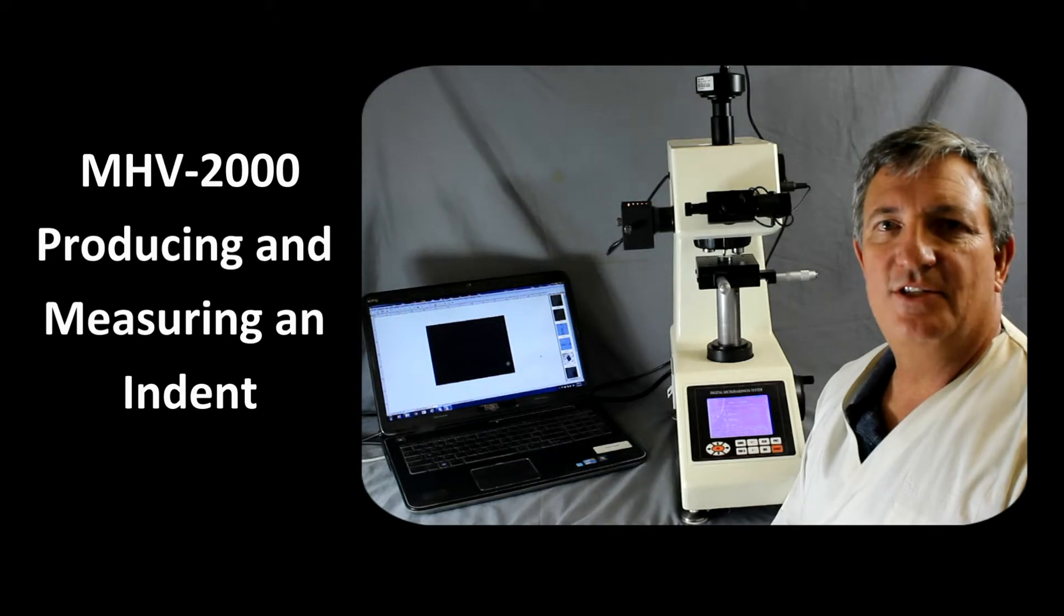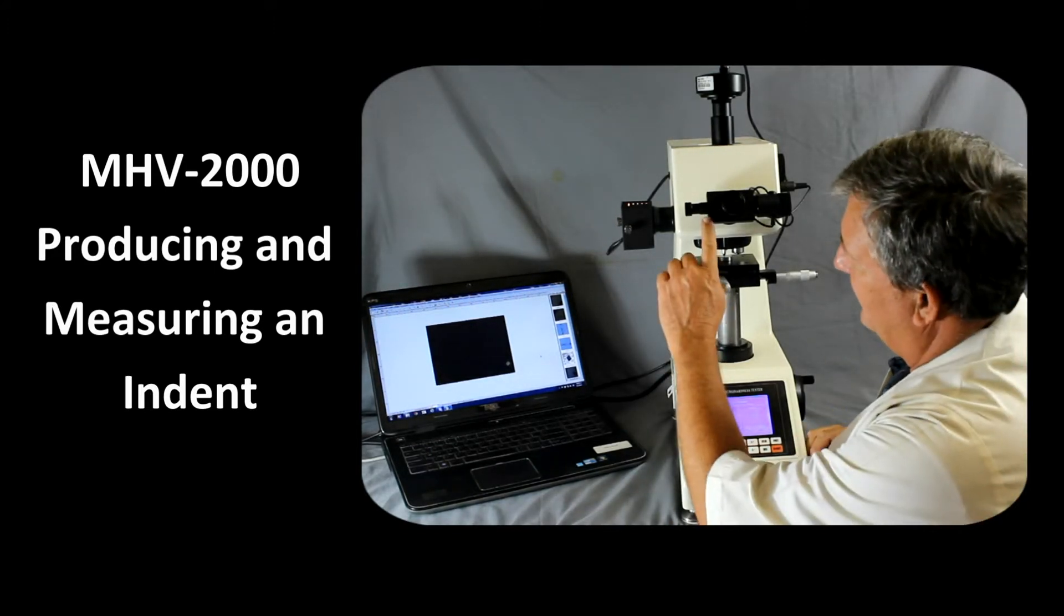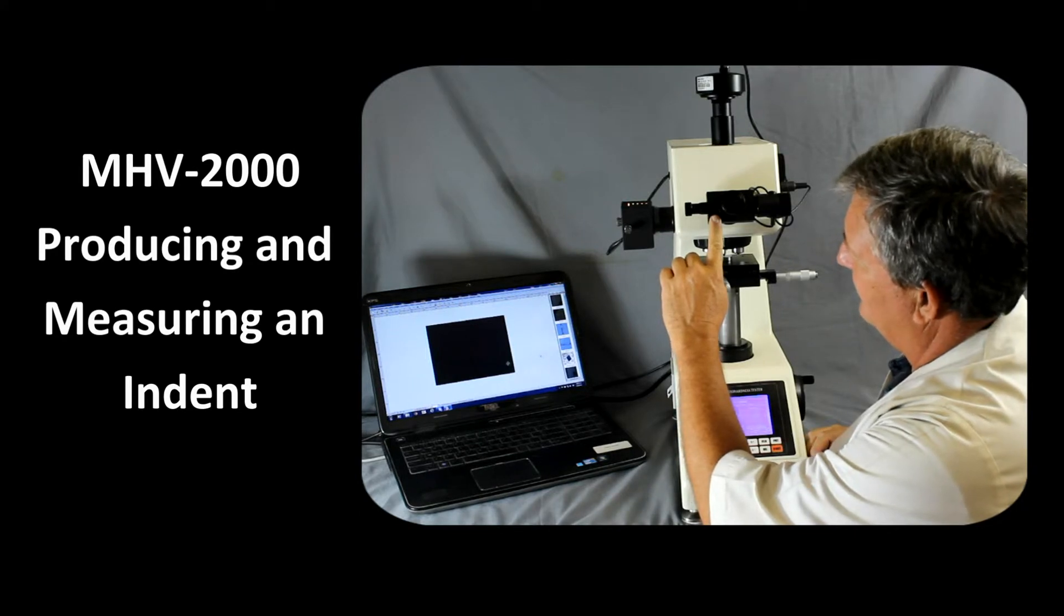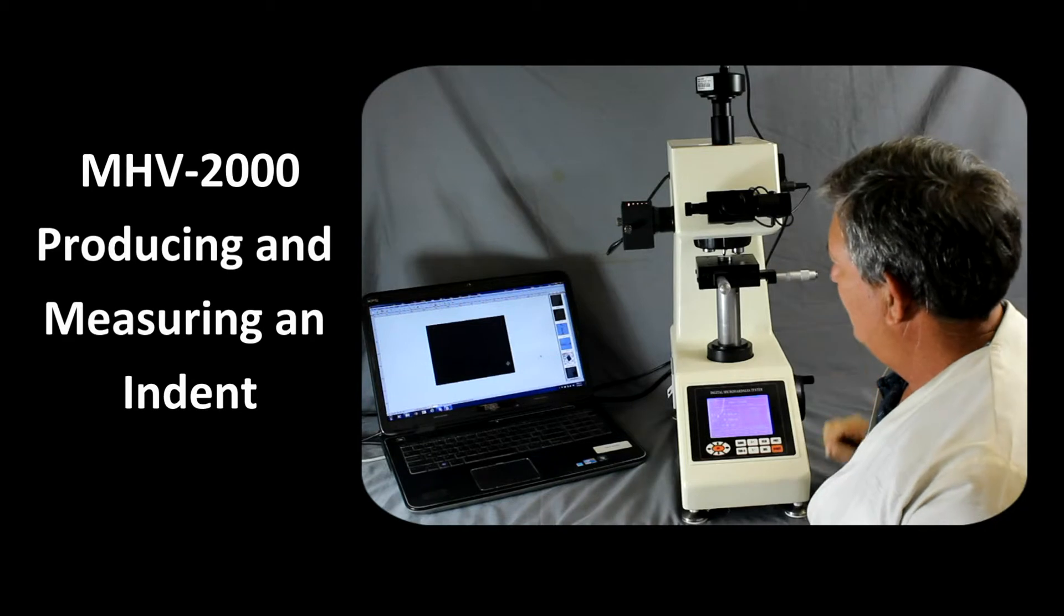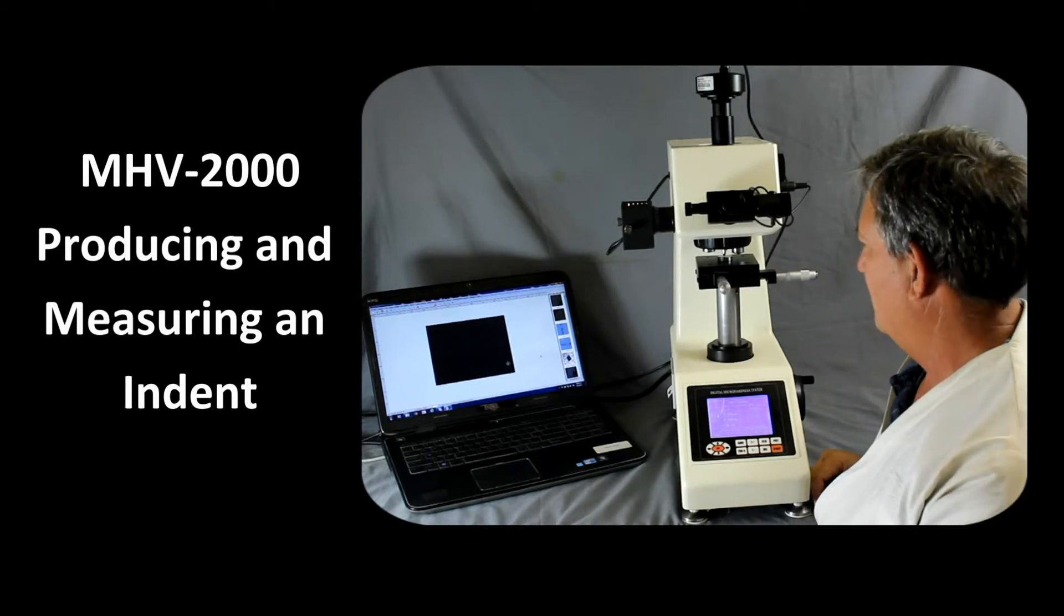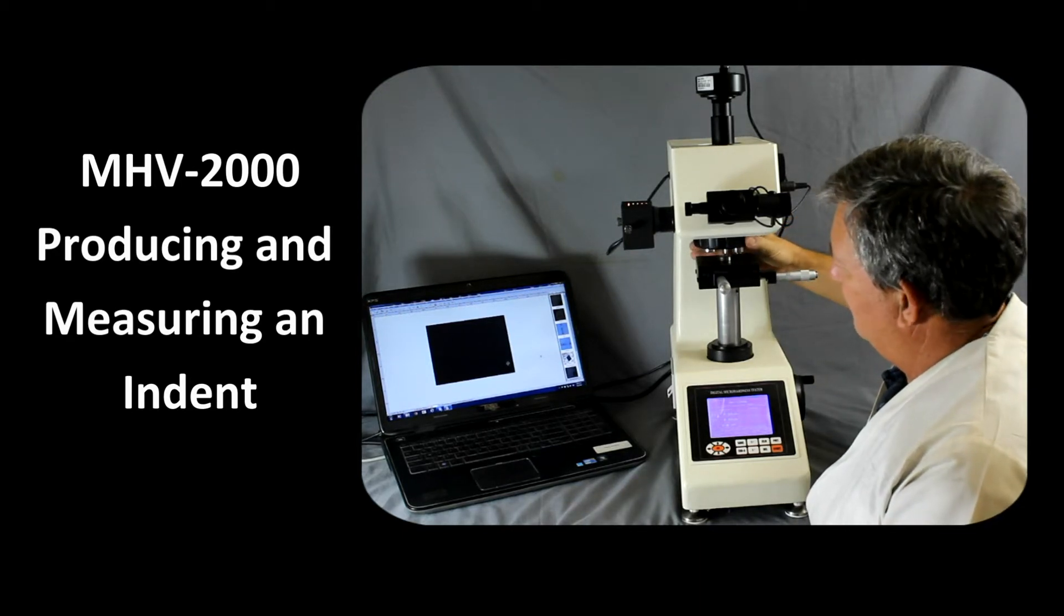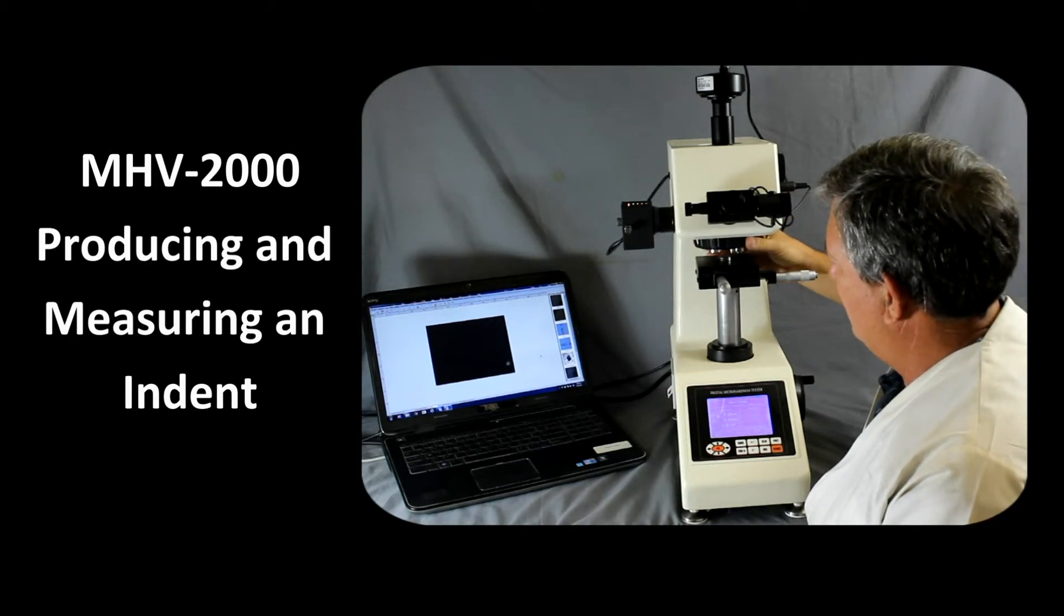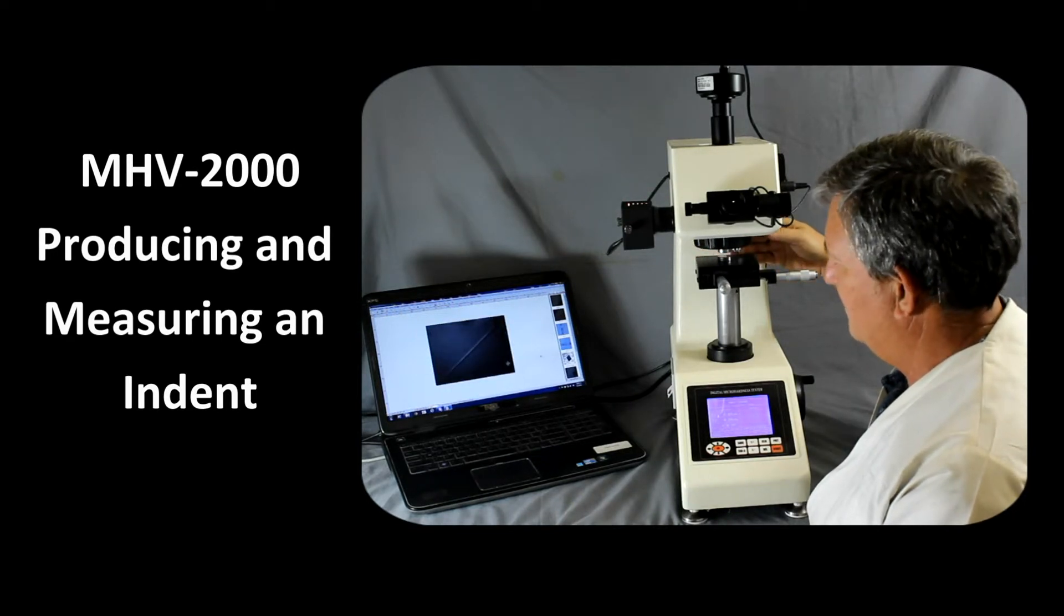Making a measurement with the MHV-2000 micro hardness tester. After calibrating the filer and setting it to zero, what we want to do is focus on the sample. This is perhaps the most difficult part about taking a measurement with a micro hardness tester. For those of you that haven't worked with the micro hardness tester much in the past, what I'd recommend is that you focus with the 10x objective, which is going to be a little bit easier.